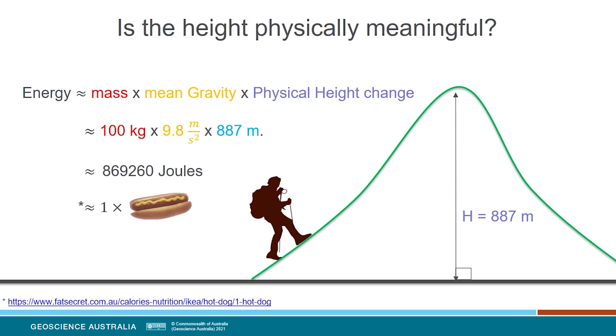In the same way, physically meaningful heights also predict how water will flow. Water moves to the smallest possible potential energy level in the Earth's gravity field as it flows, which is the same place with the smallest physically meaningful height. The potential energy is larger at the top of the hill than at the bottom, so water has a tendency to flow from the top to the bottom. For this reason, physically meaningful heights are useful for a number of industrial and research applications in fields like civil engineering and hydrology.